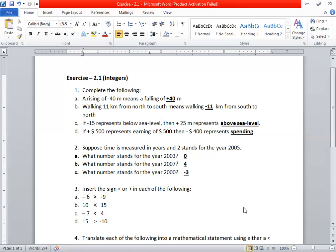What number stands for the year 2007? After 2005, we have 2006 as number 3, then 2007 is 4. So the answer is 4. What number stands for the year 2000?